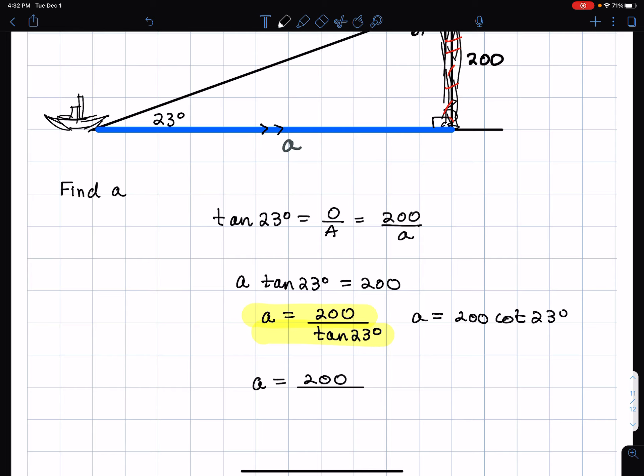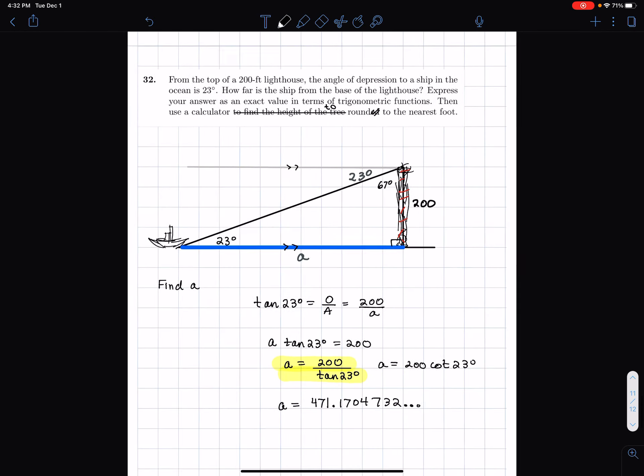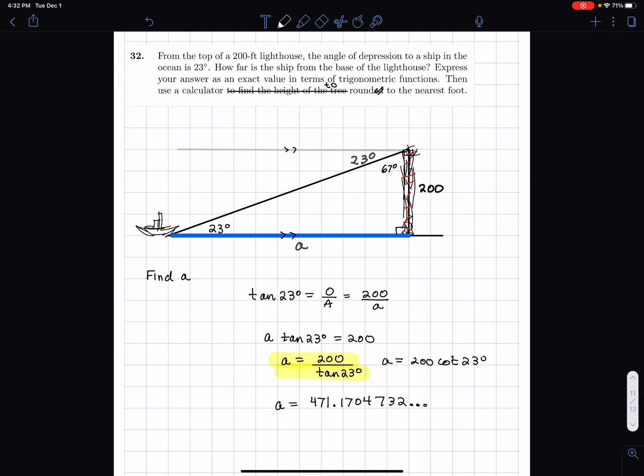Well, it says that this A, using the calculator, is 471.1704732. It's an irrational number. The only reason it stopped is because that's what my calculator is set to. But we're supposed to do this to the nearest foot. So A is approximately 471 feet.